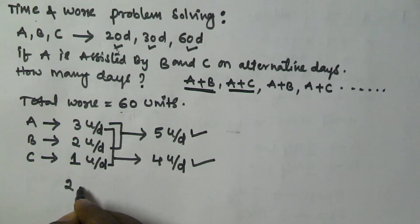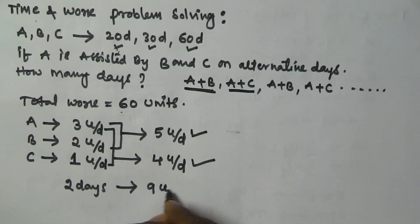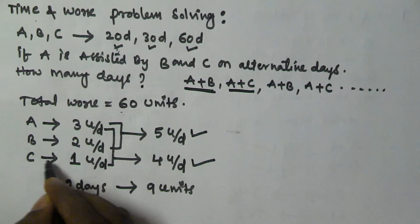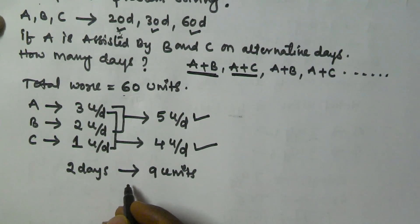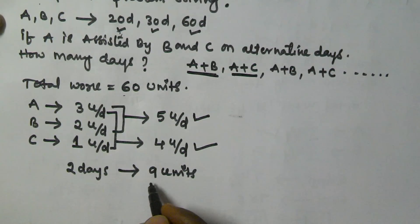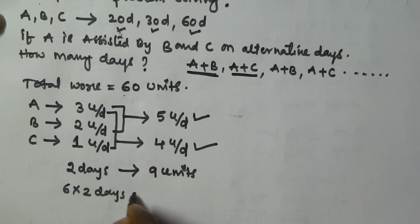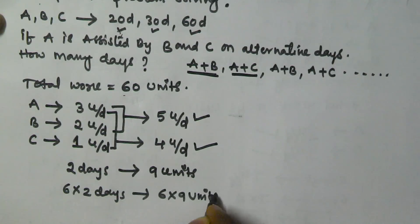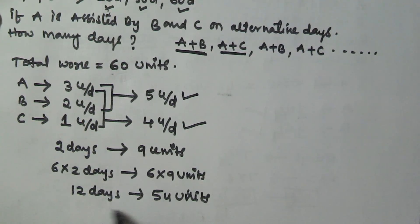That means in two days A, B and C will finish 9 units. In two days A, B and C together will finish 9 units. So multiplying both sides by 6: 6 into 2 days gives 12 days, and 6 into 9 units gives 54 units. That means in 12 days, 54 units are finished.